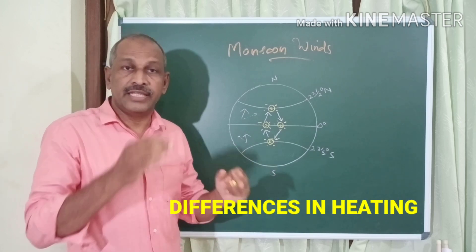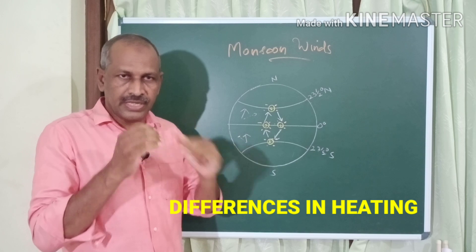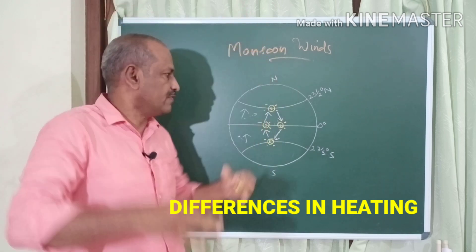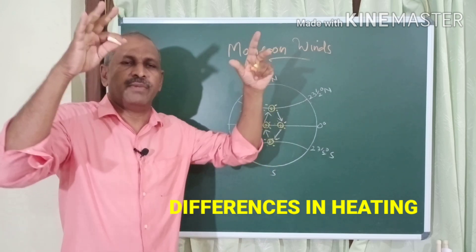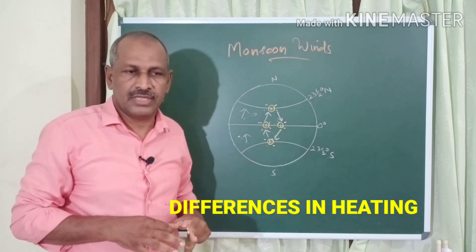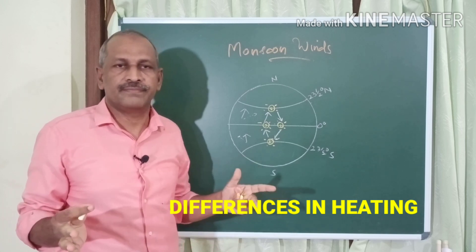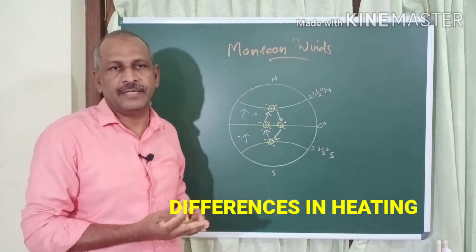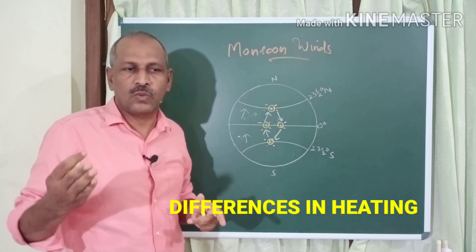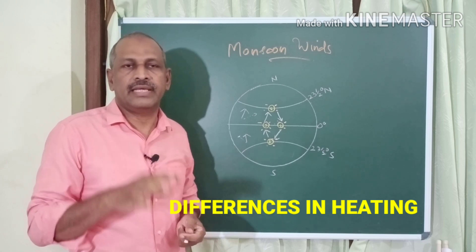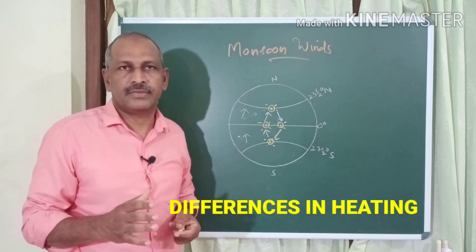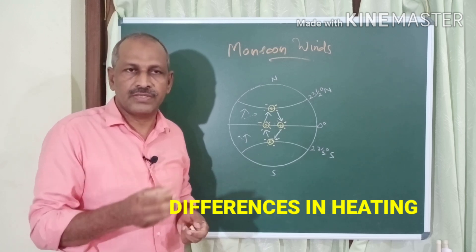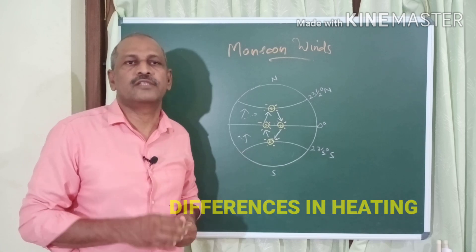The third factor is differences in heating. If the same amount of solar energy is received by land and a water body, the heating is different. Land gets heated quickly and cools down quickly, but water takes more time to heat up and more time to cool down. This is what we call differential heating of land and water.